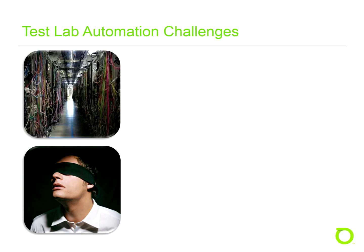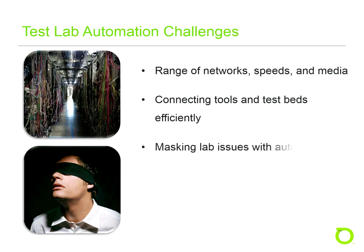While the objectives of test lab automation are clear, certain challenges need to be dealt with in order to achieve success. The wide range of networks, speeds, and media types in most test labs adds complexity when trying to connect test tools and test beds efficiently. Also, planners need to be careful that issues and inefficiencies aren't simply masked rather than fixed through automation efforts. Lab automation projects often have high expectations around return on investment, so the test lab should be both automated and optimized.